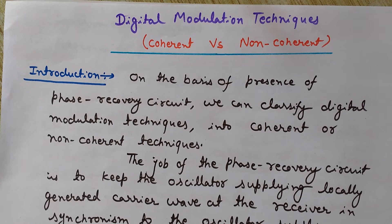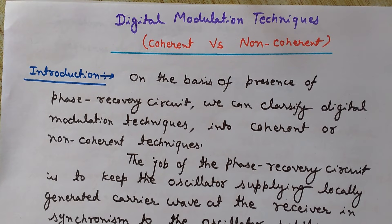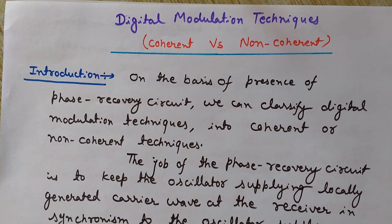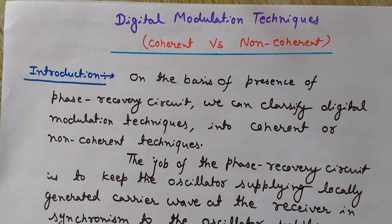On the basis of the presence of a phase recovery circuit, we can classify digital modulation techniques into coherent or non-coherent techniques. So what is this phase recovery circuit? The purpose of using a phase recovery circuit is to keep the oscillator supplying the locally generated carrier wave at the receiving end in synchronism with the oscillator at the transmitter.